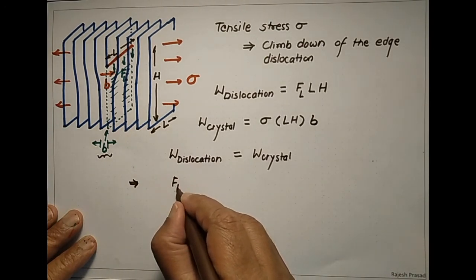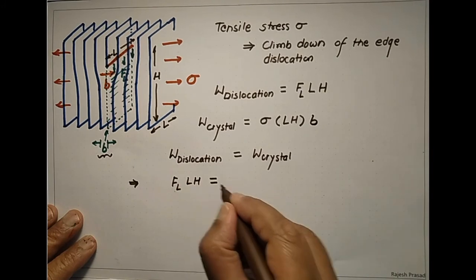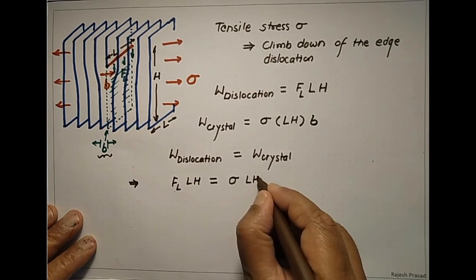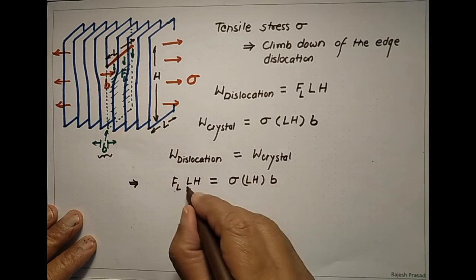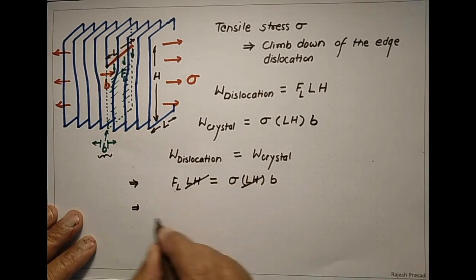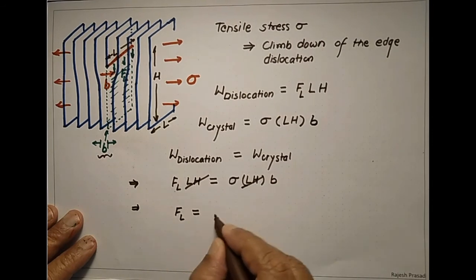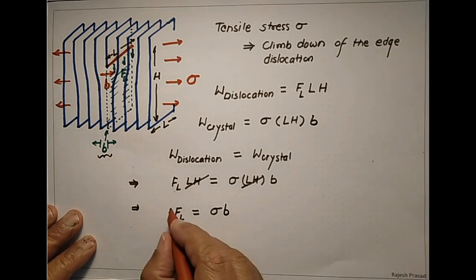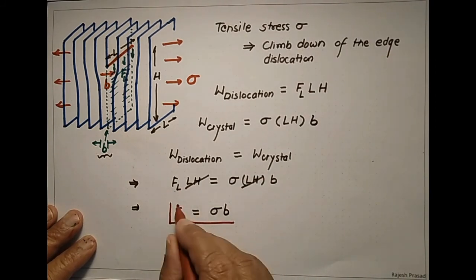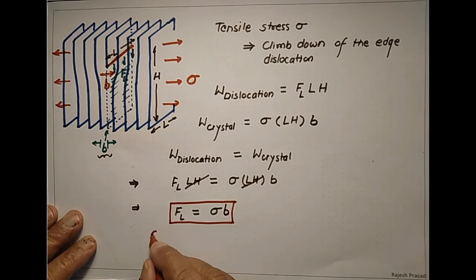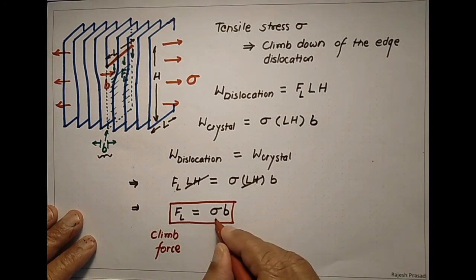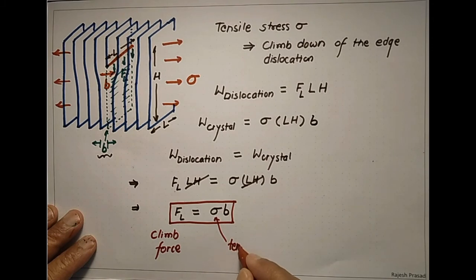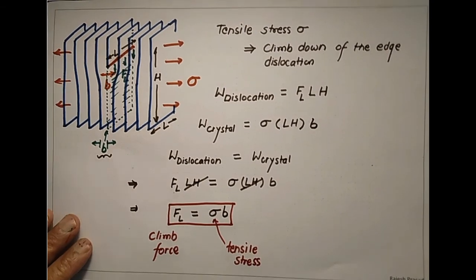To calculate FL, we equate the two expressions: FL · L · H equals σ · L · H · B. This gives FL equals σ · B. So σB is the climb force per unit length on the dislocation due to the tensile stress acting on the crystal. Thank you.